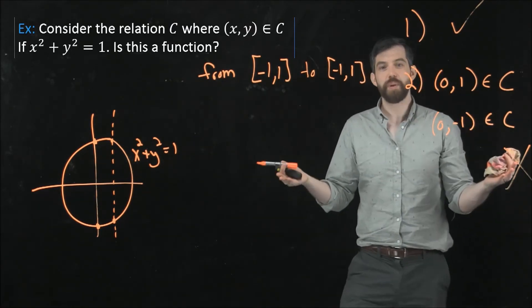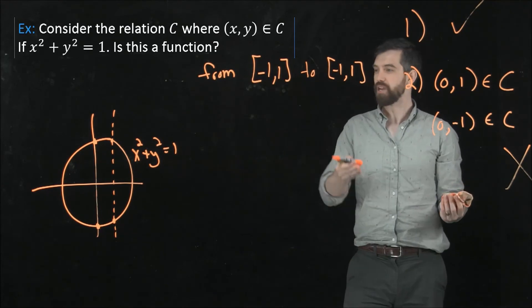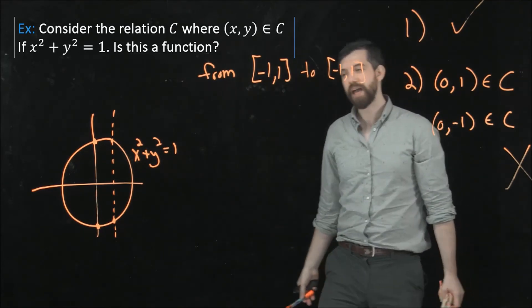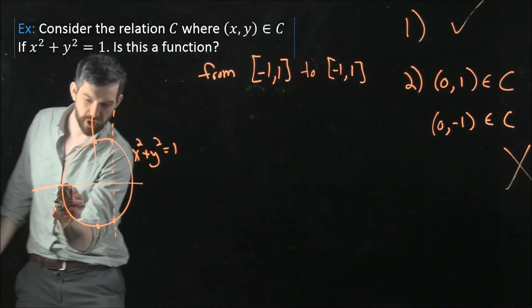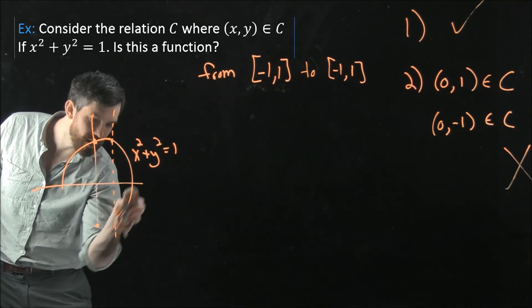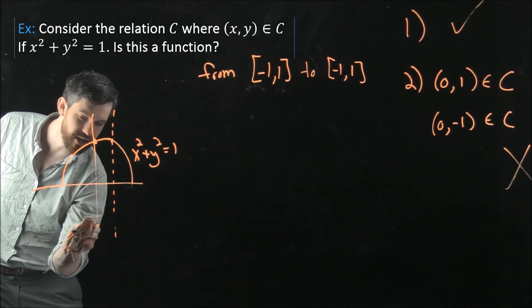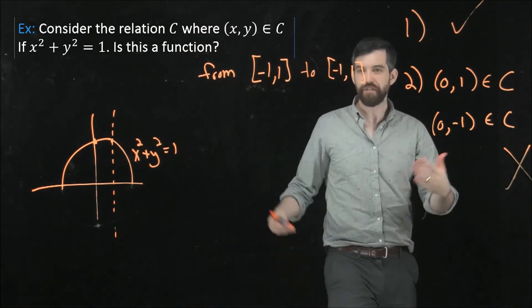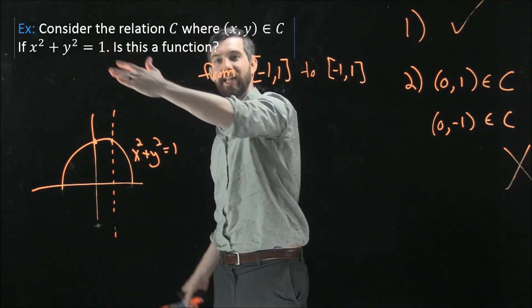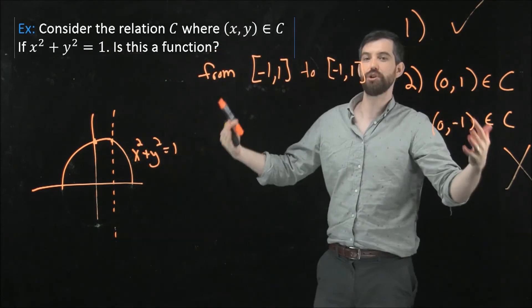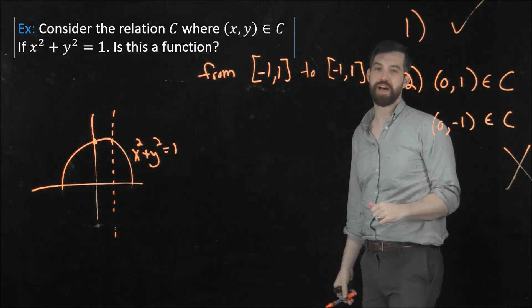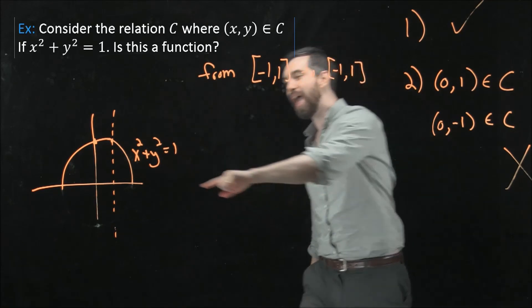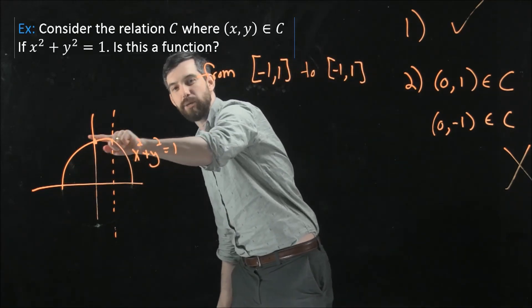Now maybe the final thing that we could do here is we could correct this by not considering the entire circle. I could get rid of this portion down here. So this is a different thing. It's no longer the circle relation. It's the circle relation with the additional condition that I'm only taking positive values of y. But then it has fixed the problem.